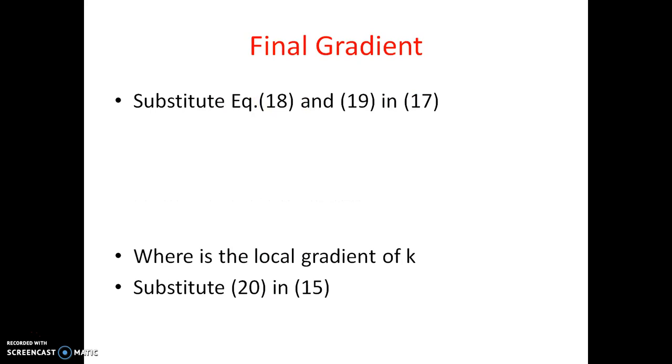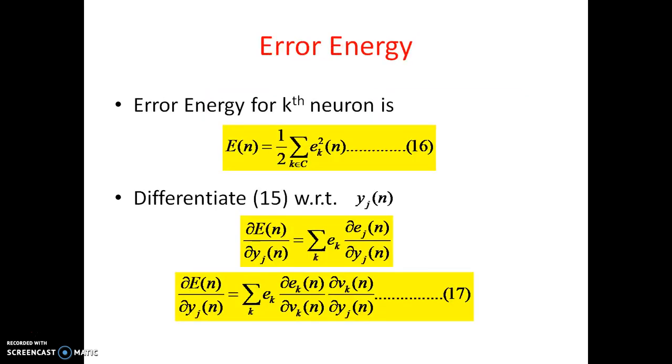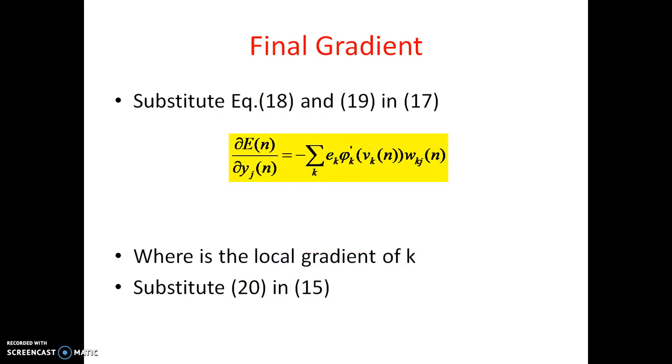All these steps are exactly same as the previous one where we have applied the same things only and taken the derivatives for the same thing. So the final gradient is this one. Substitution of 18 and 19 in 17. So these two equations, these two green colored equations will be substituted in the 17. 17 means this bigger yellow colored one. So once the substitution has been done, it will be like this. Dou E of N by dou Yj of N is equal to minus sigma k Ek phi k dash of Vk of N Wkj of N.